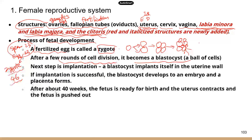A blastocyst will try to implant in the uterus — so the next step is implantation, and the goal is to implant itself in the uterine wall. If implantation is successful, then this ball of cells will develop into an embryo, and a placenta will form. The placenta is how the fetus can get nutrients, including oxygen, from the mother. Also, the fetus needs to get rid of all the metabolic wastes, including carbon dioxide — so the placenta is where the exchange of things happens.